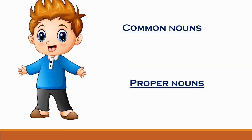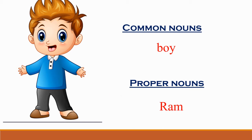What can you see in the picture? This is a boy. We gave the name Ram to this boy. A proper noun always begins with a capital letter. So R in Ram is capital because it is a proper noun.